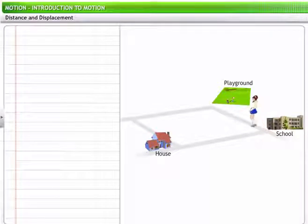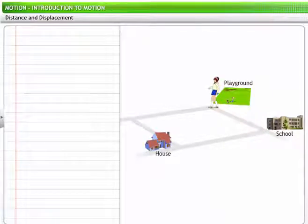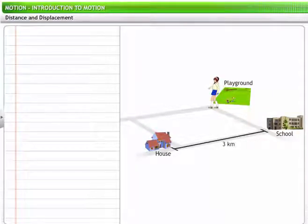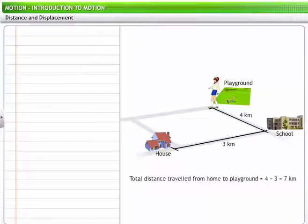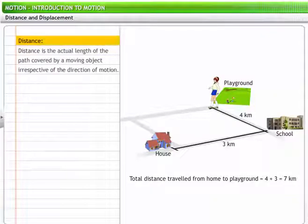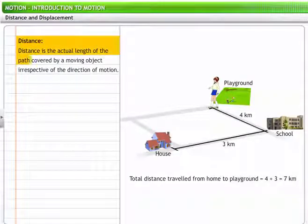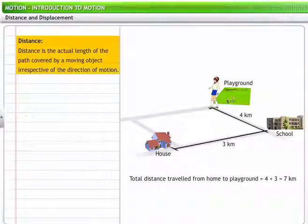Let's look at these quantities using an example. At the end of her school day, Mary goes from home to school to the playground. The school is three kilometers away from her home and the playground is four kilometers away from the school. So, from home to school to the playground, Mary travels a total of seven kilometers. This is the distance traveled by Mary.